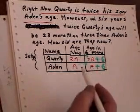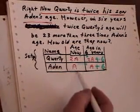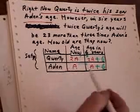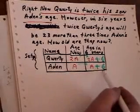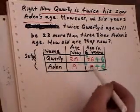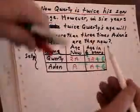Now as we translate, if we're talking about their ages now, I would use 2A for Corti and A for Aiden. But if we're talking about their ages in six years, I translate it as 2A plus six for Corti and A plus six for Aiden.